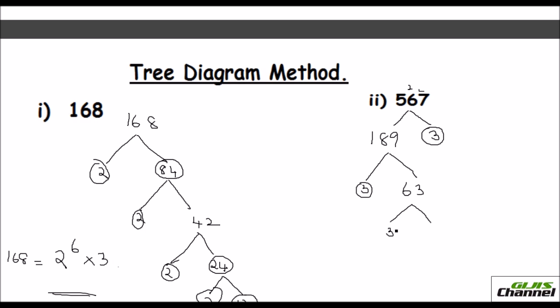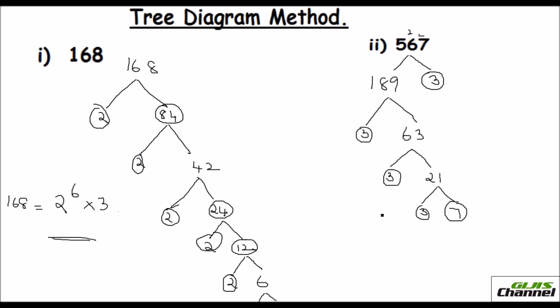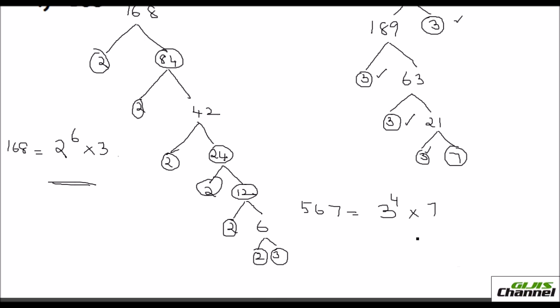This 21 you can again split. So that would be 3 times 7. So you have got all the prime factors which I have circled. You can say 567 is equal to, how many 3's you have? 3, 1, 2, 3, 4. So 3 raised to 4 times 7. 3 raised to 4 times 7 is your prime factorization of this number.